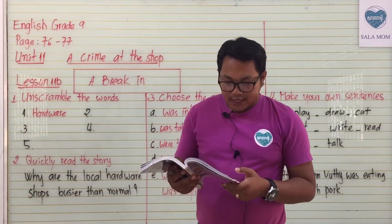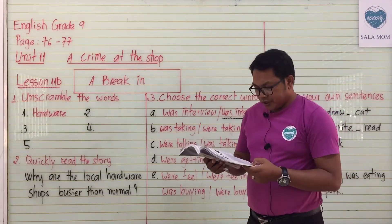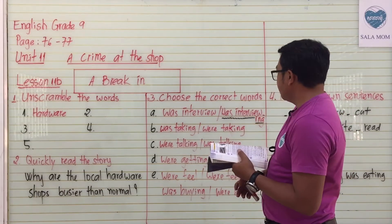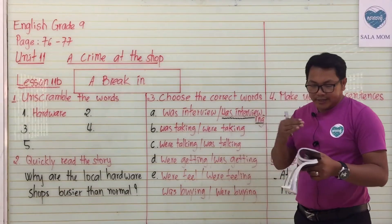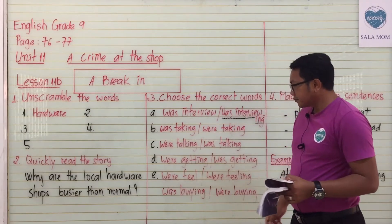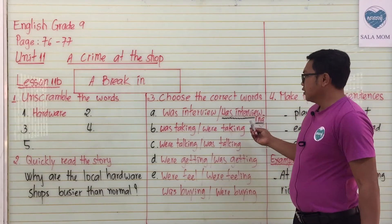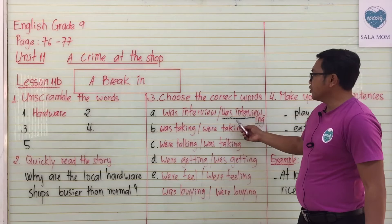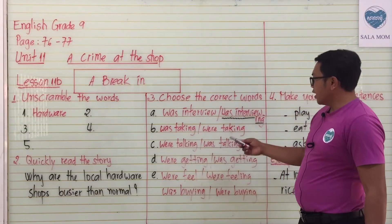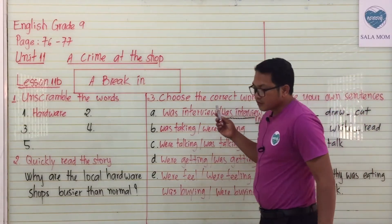Look at number three: choose the correct words and write a sentence in your notebook. You choose whether the phrase is correct. We have options A, B, C, and D, and you have to choose — for example, 'was interviewed' or 'was interviewing.' The correct answer here is 'was interviewing.' Choose the one that is correct.